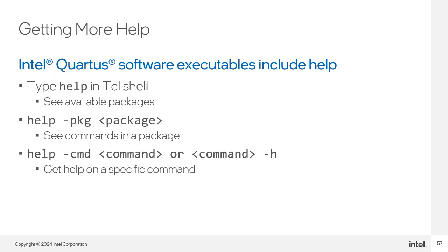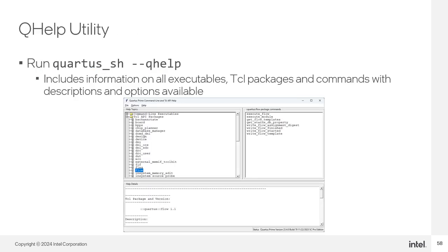The Intel Quartus Prime software command line executables include built-in help accessible with the 'help' command in an interactive shell or via the --tickle_eval option. Typing 'help' by itself shows a list of loaded and available packages. Typing help with a package name shows all commands available in that package. Typing 'help -command commandname' or executing a command with -h provides help on that specific command. The qhelp utility is a great way of getting help on all command line executables and the Tickle packages each loads — run quartus_sh --help to open the graphical browser with detailed information, package documentation, and script examples.